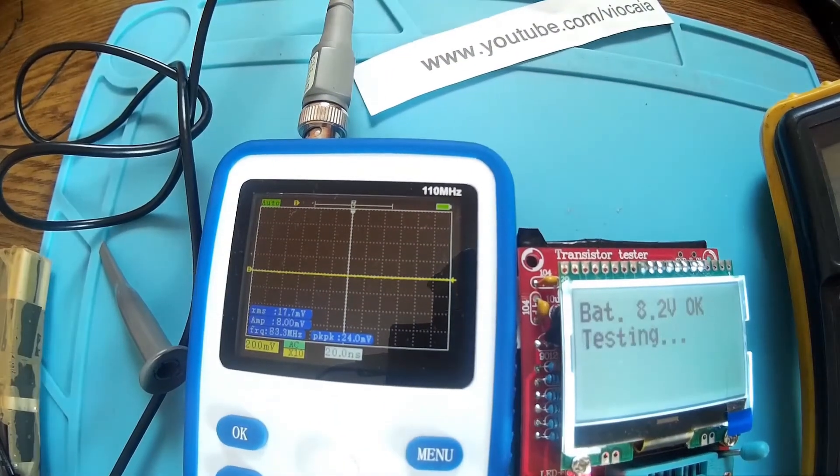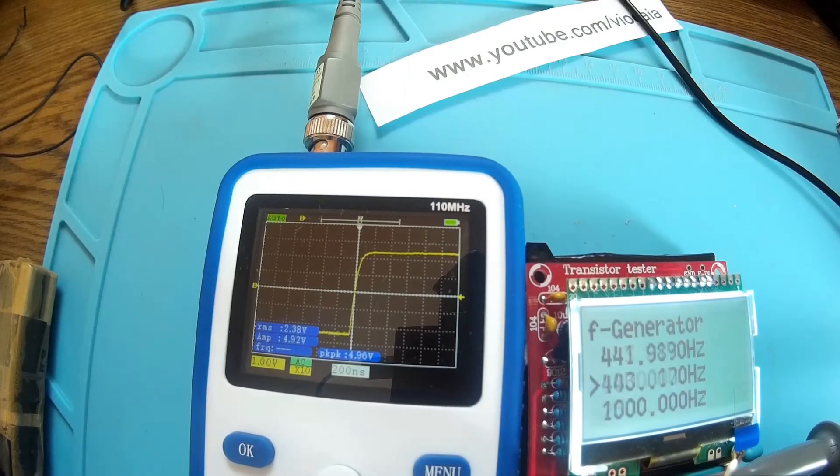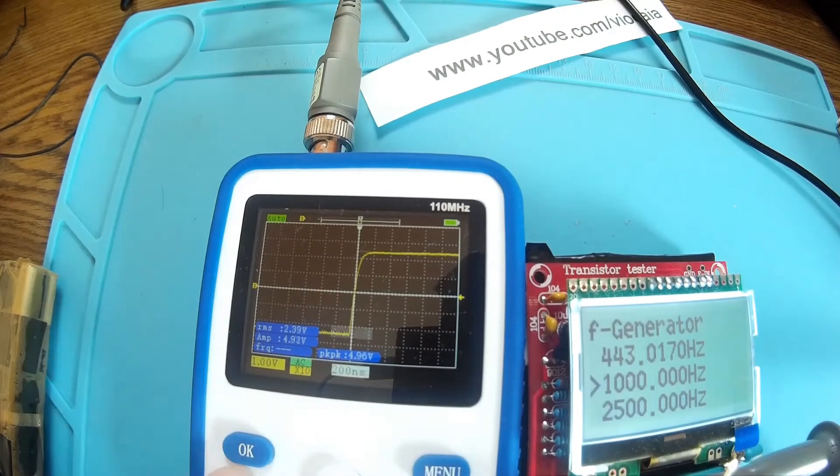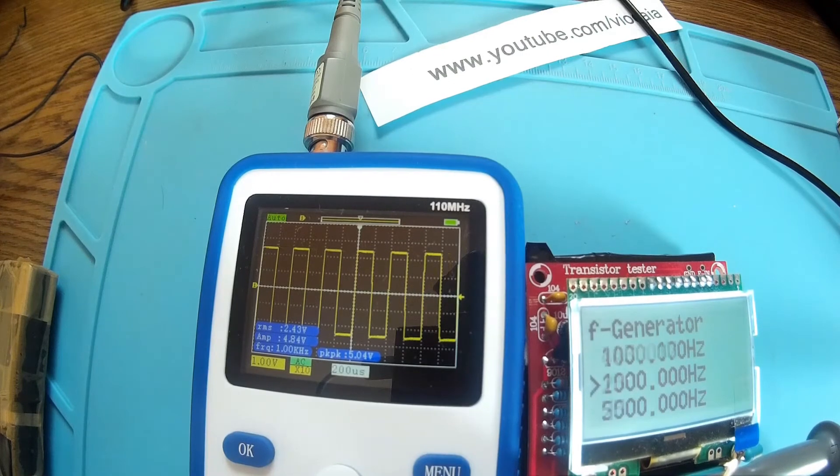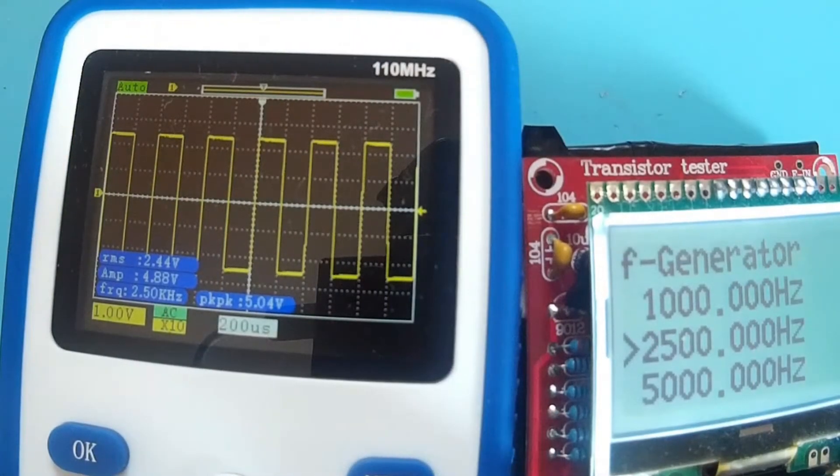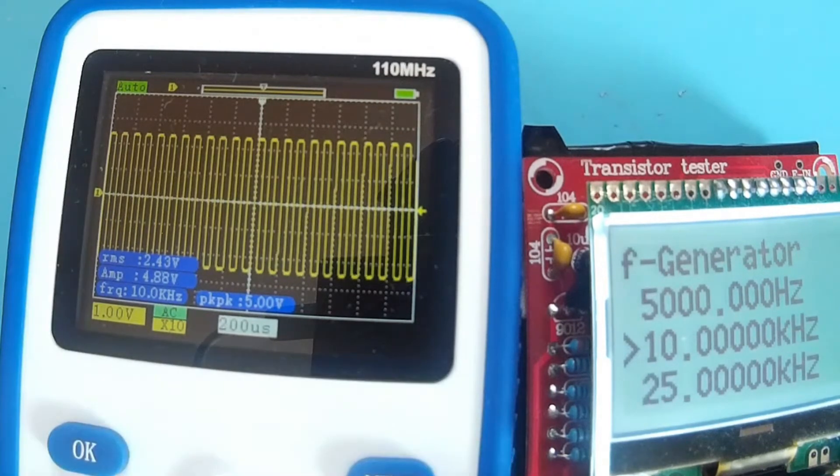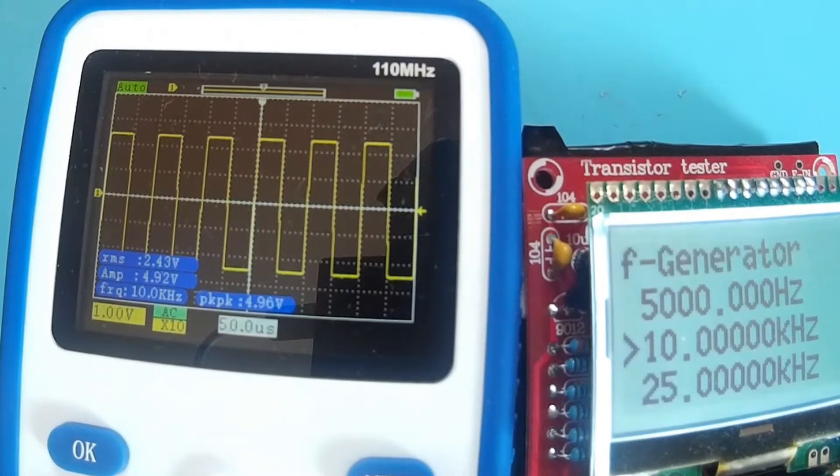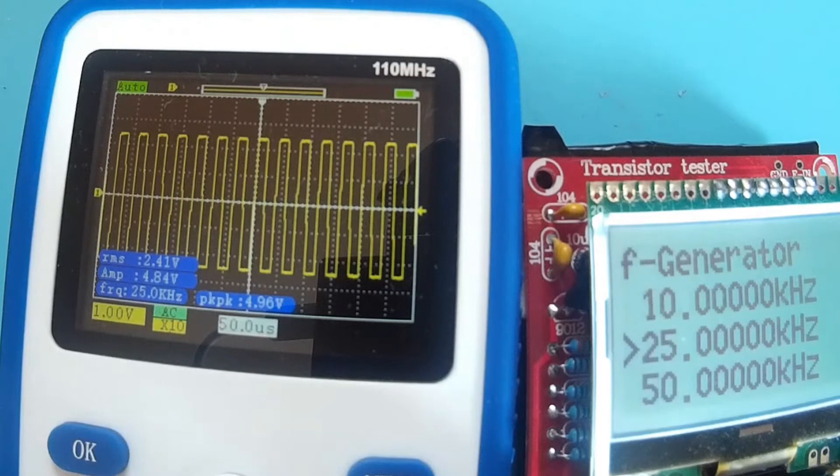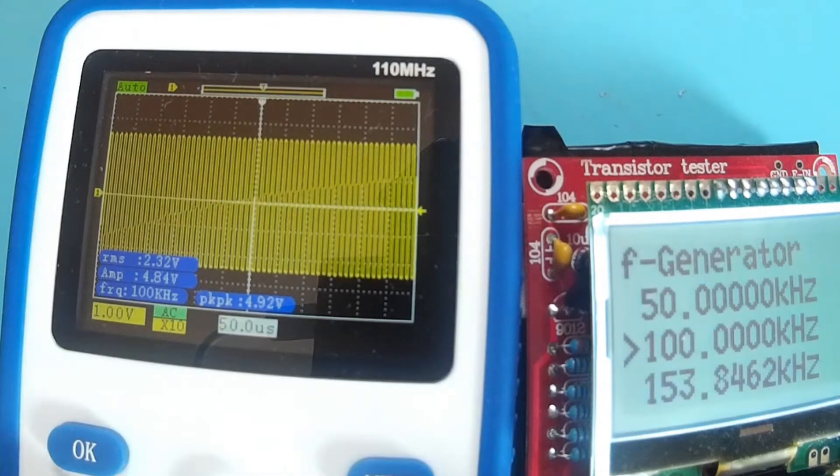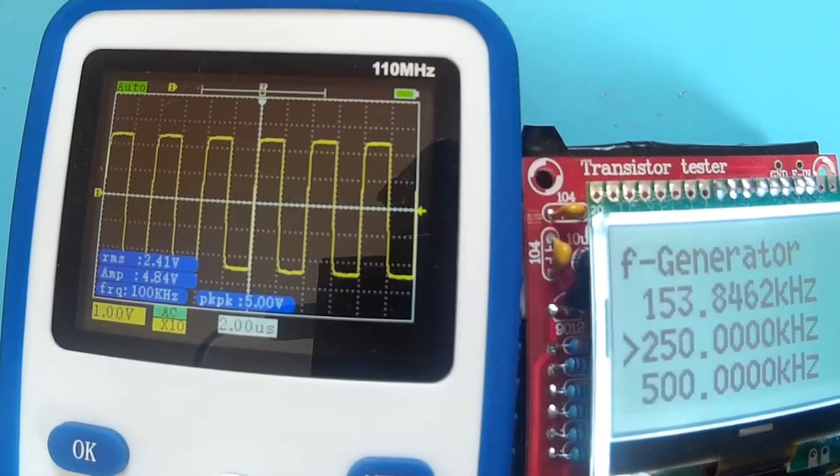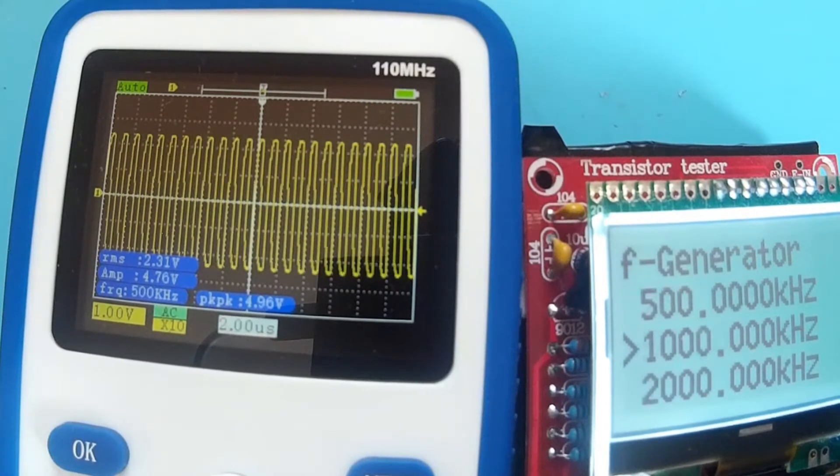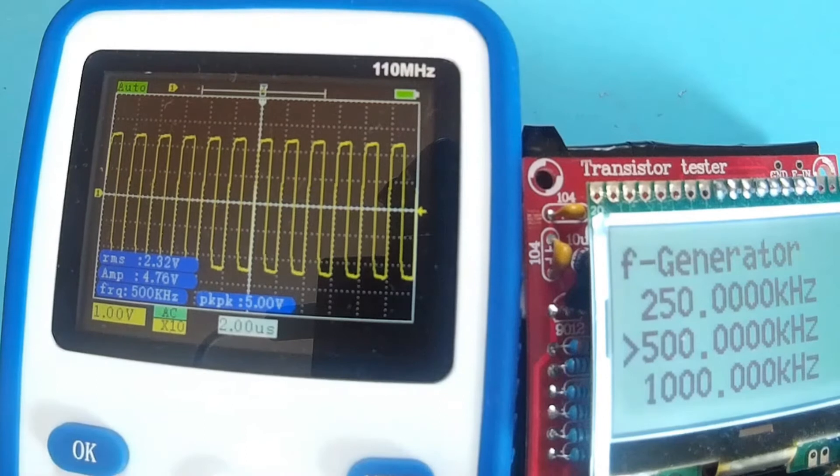Now let's use this one like a generator. Let's have 1 kilohertz right here. Oh look, it's perfect square, that's nice. Let's go a little bit higher. 2500, 10 kilohertz, nice. Auto, nice. 25, 100 kilohertz. Perfect square. 250 kilohertz. We start having a kind of degradation here of the wave, but this is normal.